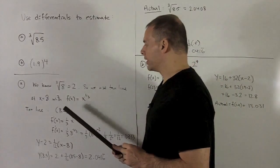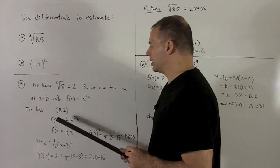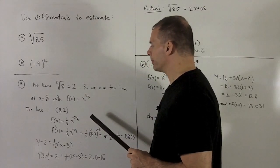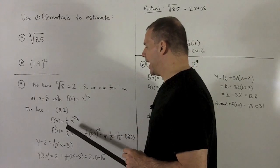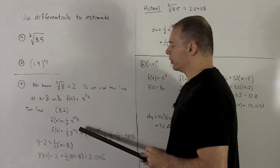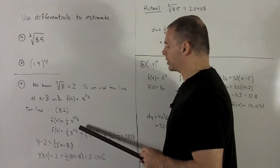Okay, we have a point on the tangent line, that's (8, 2). I take the derivative of my function. I get one-third x to the minus two-thirds. We're going to evaluate this at 8. So that's going to give me one-third, 8 to the minus two-thirds. Let's do the cube root first before we do the minus two.